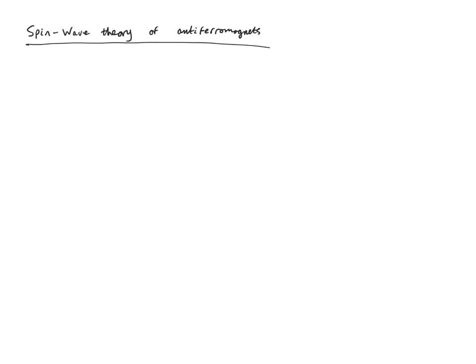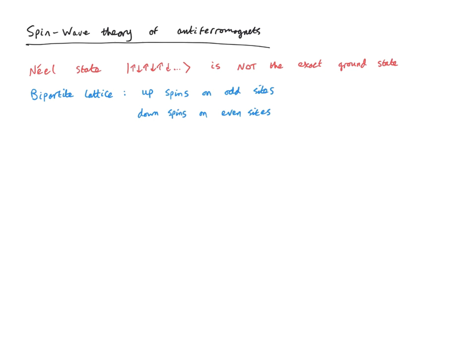I want to briefly touch upon spin wave theory for antiferromagnets. This is a little more difficult because the Néel state — the up-down, up-down state — is not actually the exact ground state of the Heisenberg spin chain model. Furthermore, the whole calculation must assume a broken symmetry situation, dividing the lattice into sub-lattices A and B, with spins on sub-lattice A pointing up and spins on sub-lattice B pointing down. We then do spin wave theory separately in each sub-lattice, finding collective magnon modes for the up-spins and down-spins. The details are more complicated and I won't go into them explicitly here.